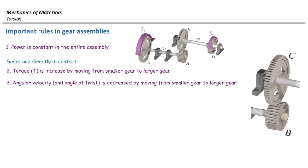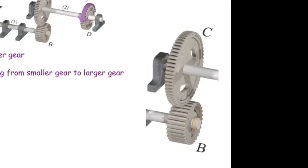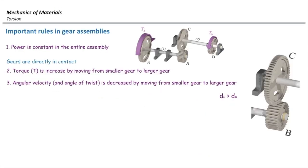So knowing these two rules, we are able to pick up the right gear ratio for our problem. Look into this specific case. In this configuration, we have diameter of C larger than diameter of B. And assume that we want to determine what is TC in terms of torque at B.